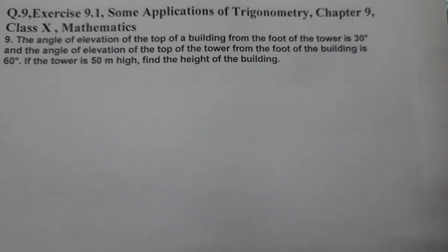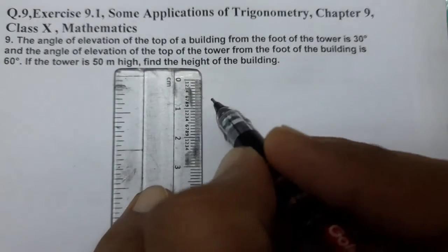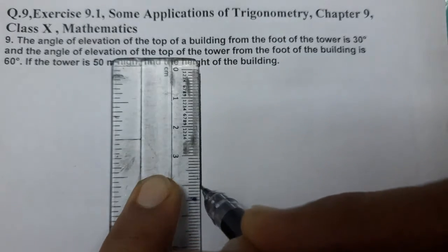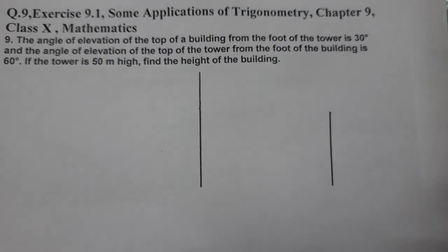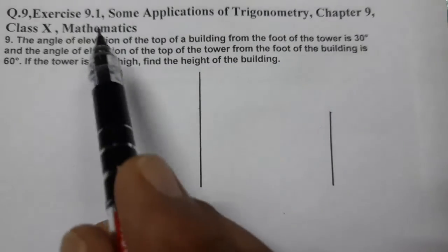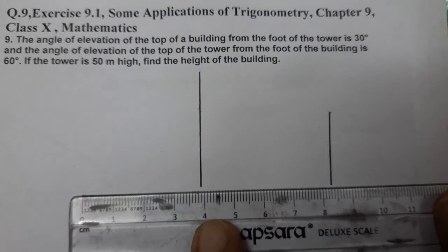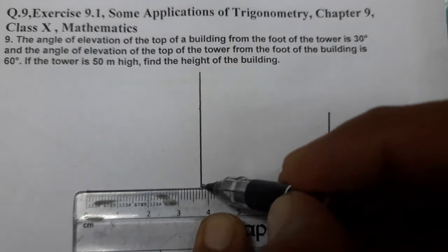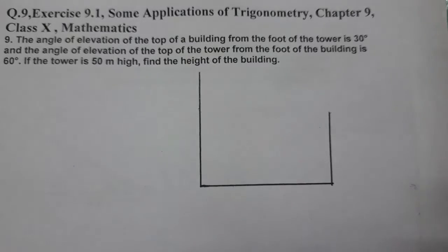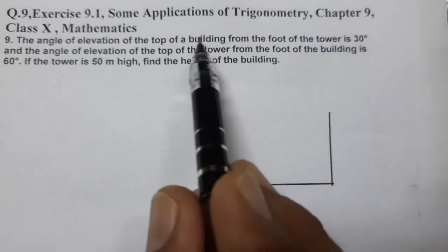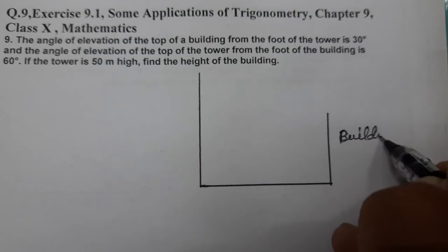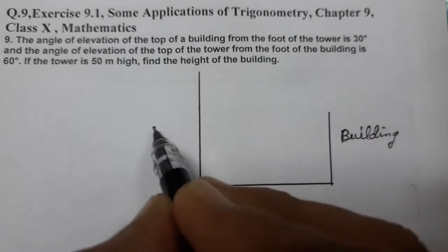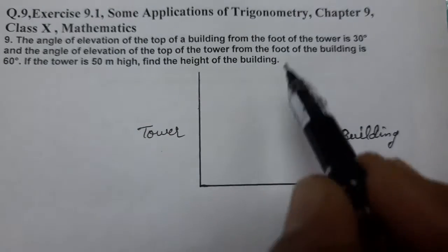So two things are there - a tower and a building. Tower is larger, tower is taller. So we have a tower and a building. The building is smaller. Now the angle of elevation and their relationship, we need to establish. The angle of elevation of the top of the building from the foot of the tower.